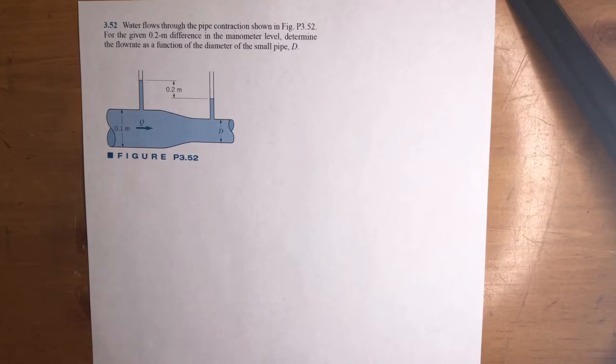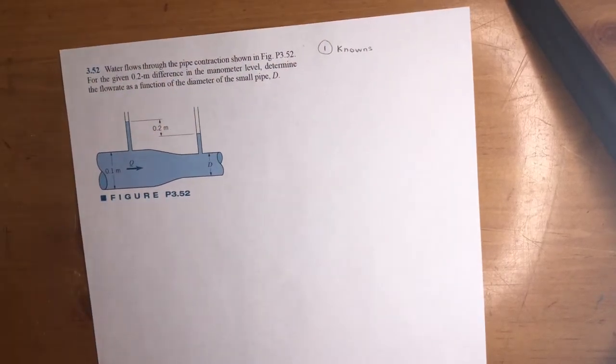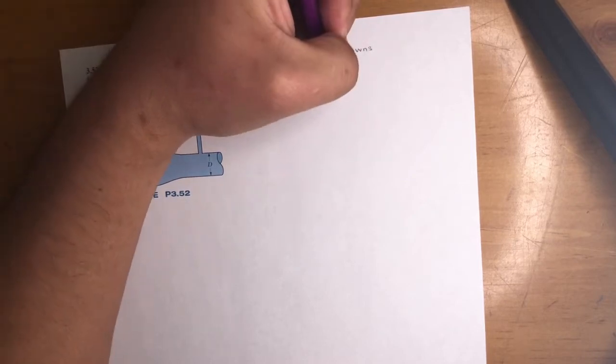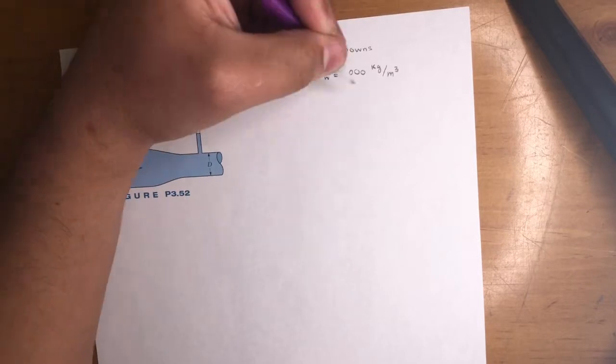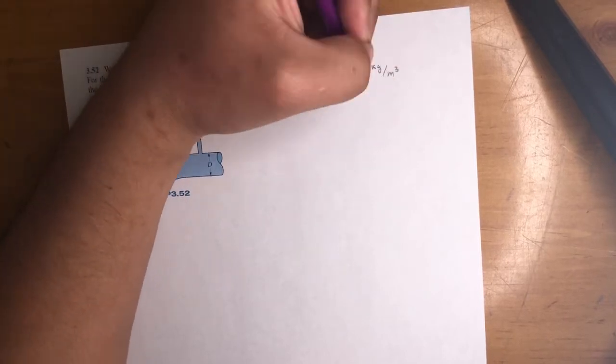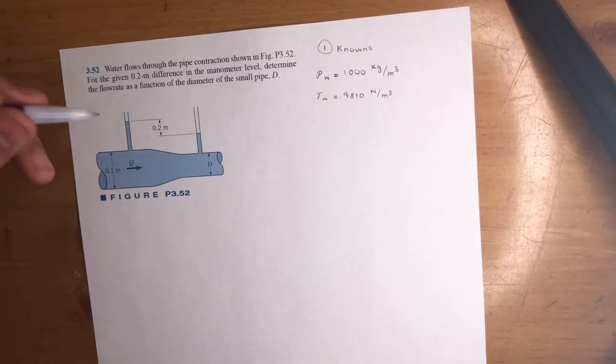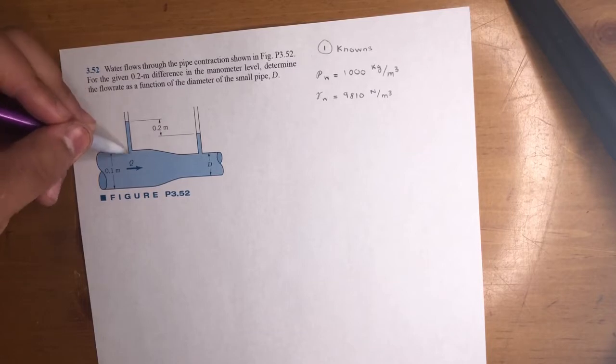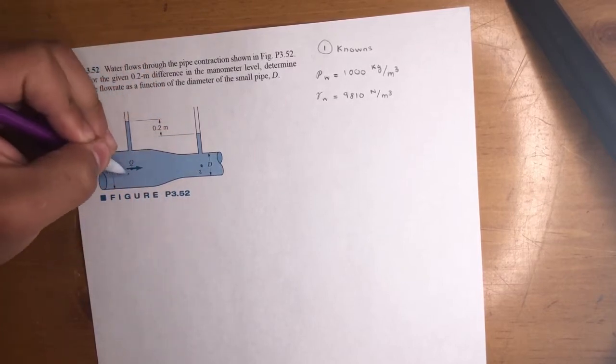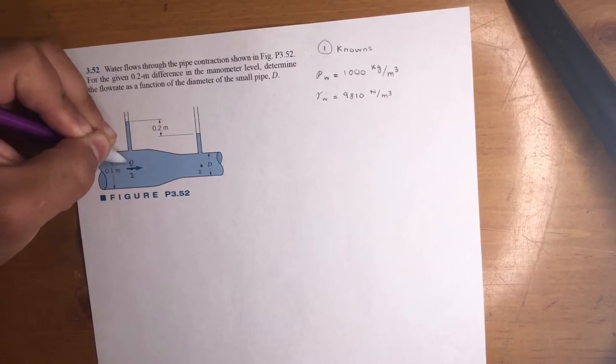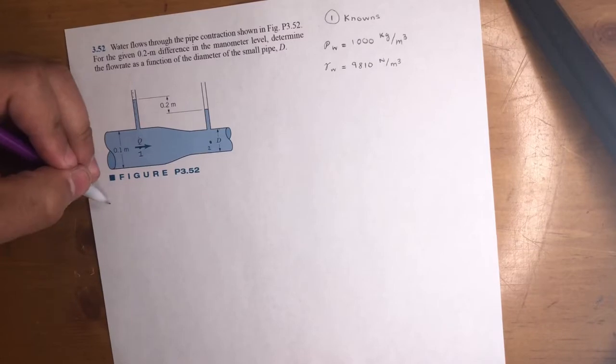Alright, so let's go ahead and get started on this one. Knowns, right? So we're dealing with water. So we know the density of water and it is in meters. So density of water is a thousand kilograms per meter cubed. And gamma of water is 9810 Newtons per meter cubed. What else? So we know this height right here is 0.2. So this right here is a manometer reading. So there's a point here and then there's a point right here, 0.2. This is 0.1. It's right here, pretty much down this line.